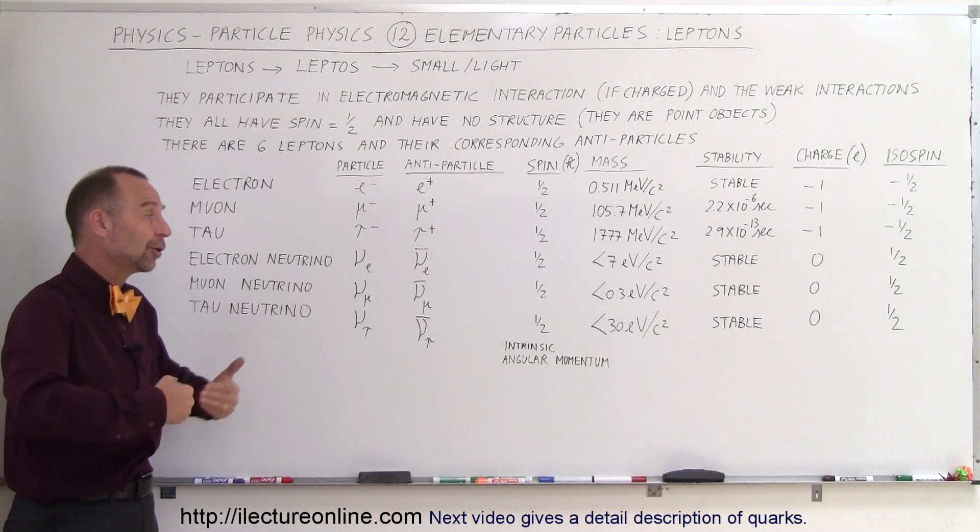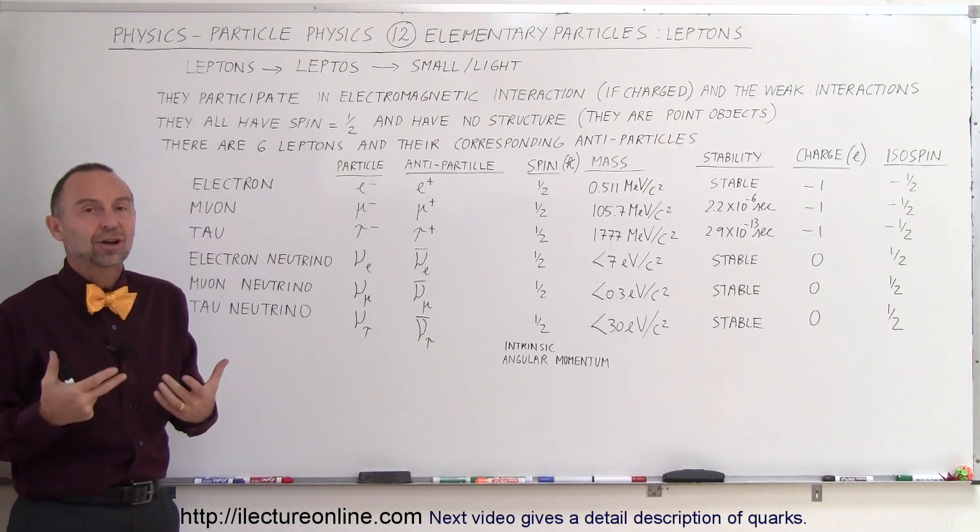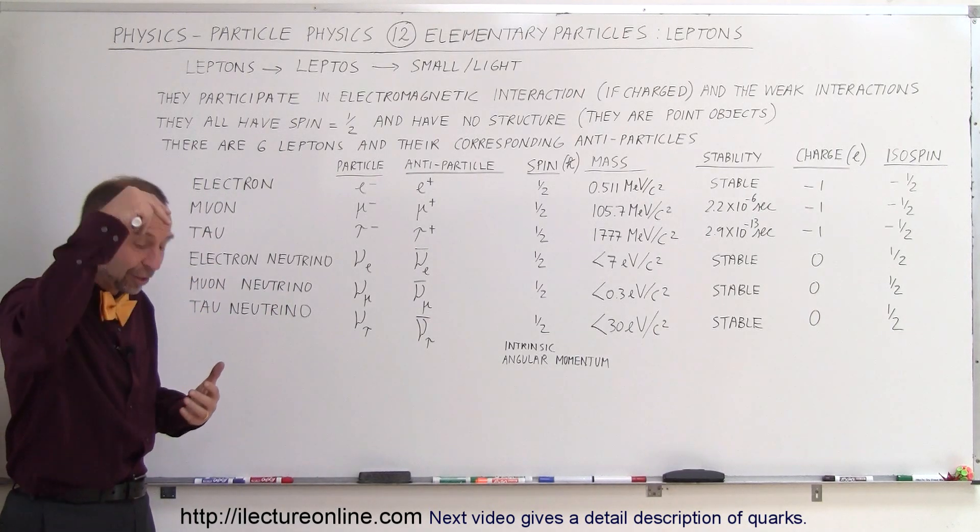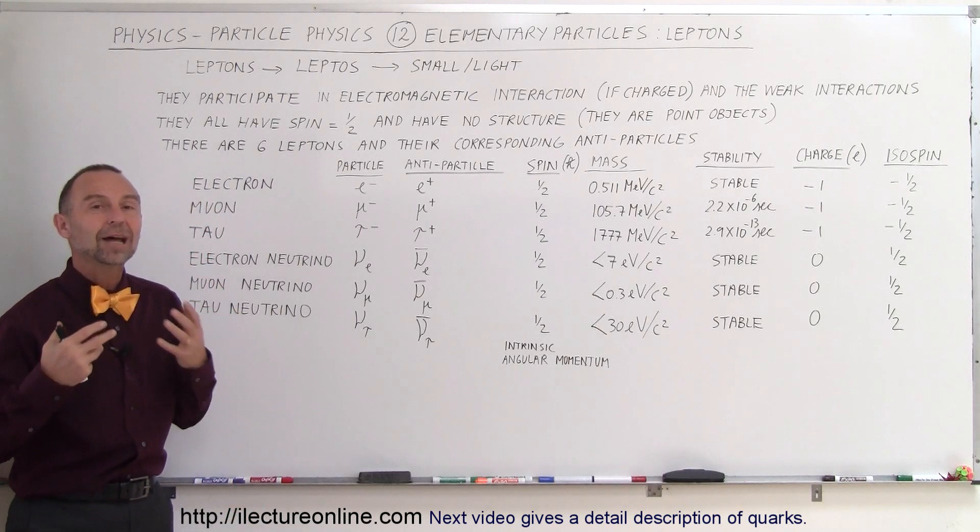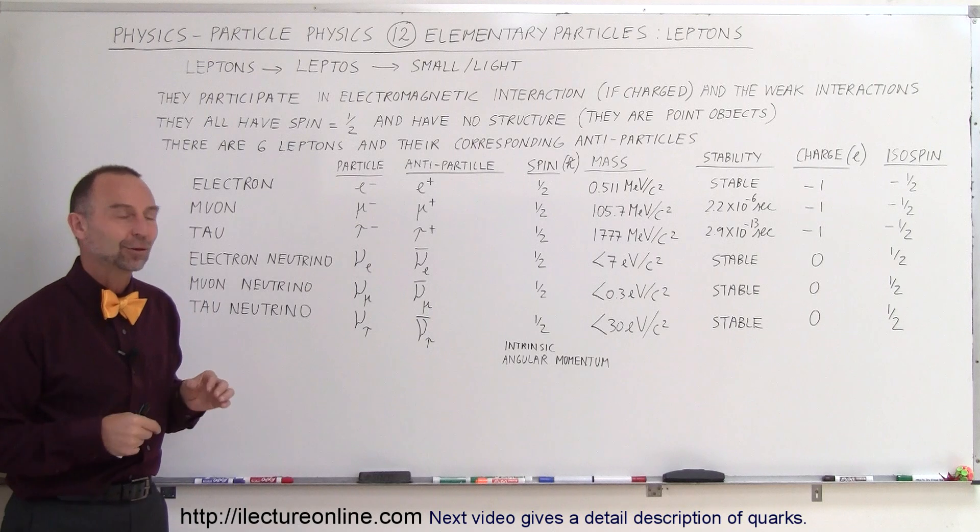As you're sitting there watching this video, there's neutrinos going through your body and not interacting at all with any atoms in your body and they continue right through the earth and continue to come out the other side of the earth and most of them do not interact with any matter inside the earth as they go right through them.